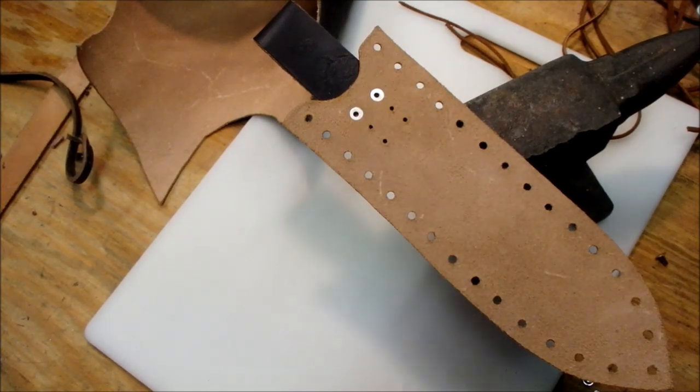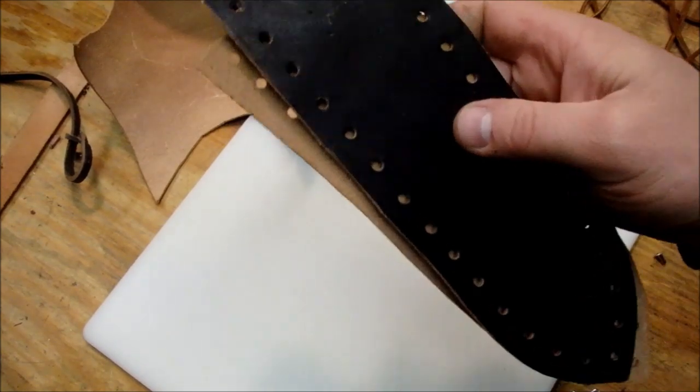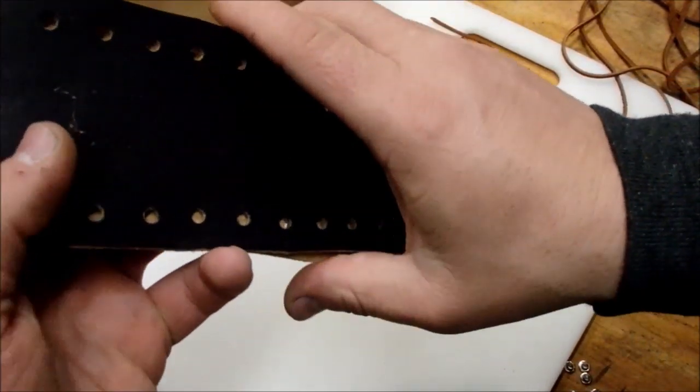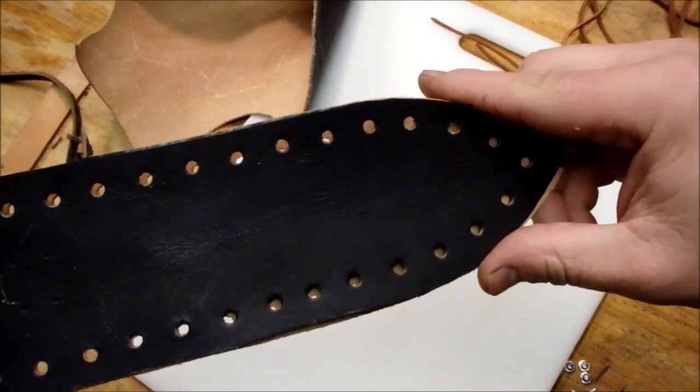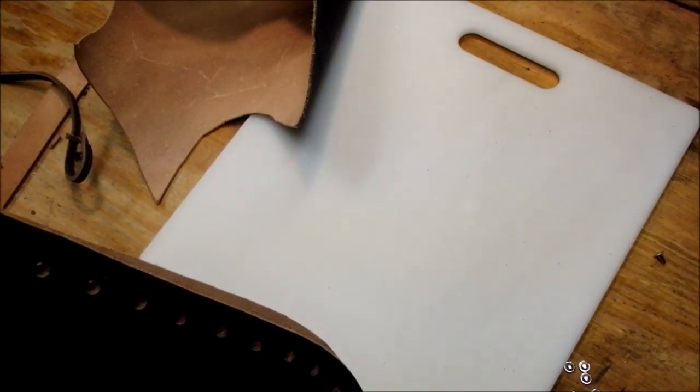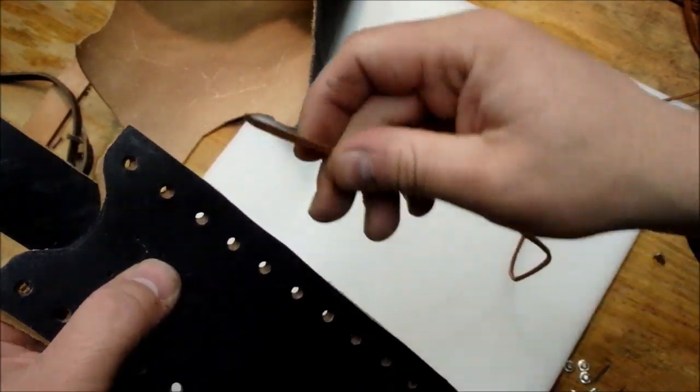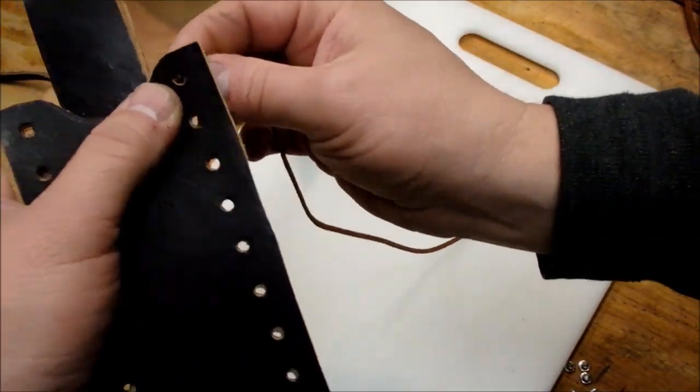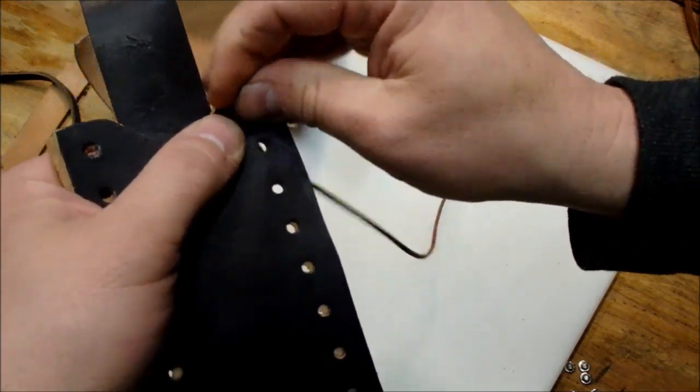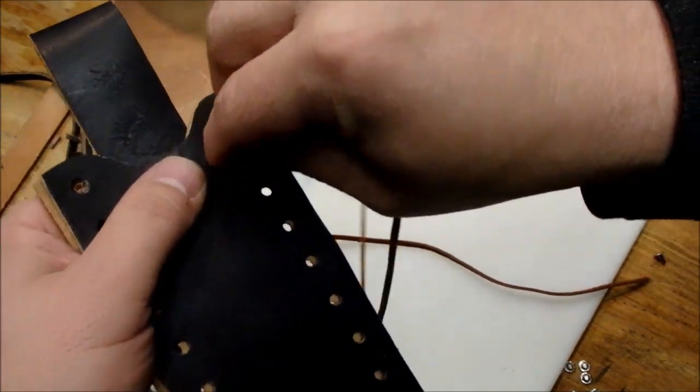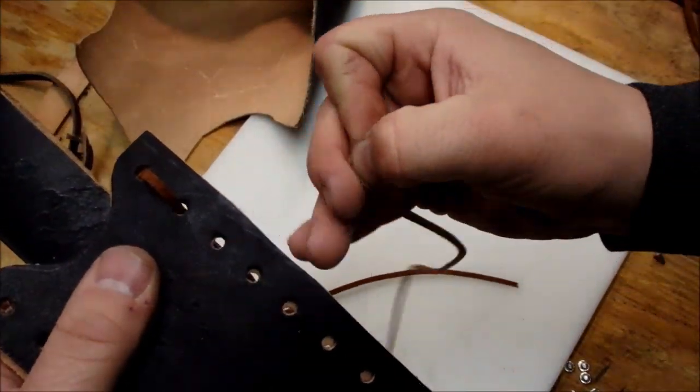But to show you really quick how to lace this up. You just want to kind of lay these two together. Line up your holes that you have punched up. Just like so. You want to take your lace. There's about a million different ways that you can lace this. You can actually do a running stitch that kind of looks like this. Where you're just running the stitch in and out.